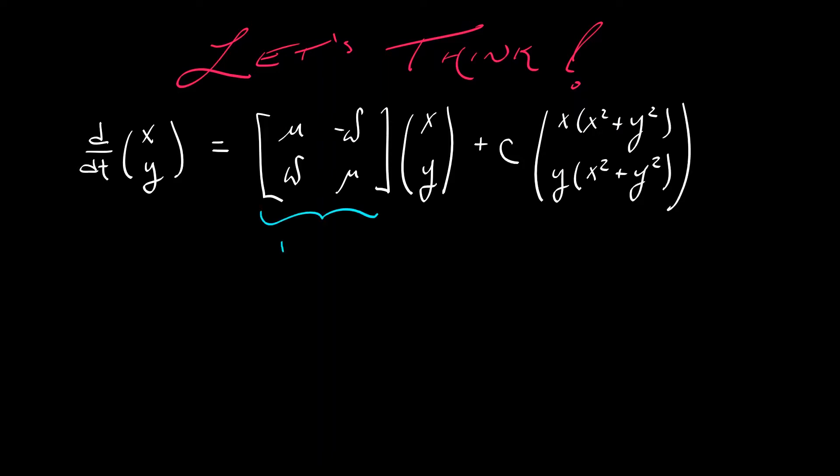So let's think. Let's write out that system. Take a careful look at what happens to the linear term when mu equals zero. In that case, what we have is a rotation matrix. Oh, that's interesting. And if I look at the nonlinear terms, I see prominent quantity x squared plus y squared. That is screaming out to me polar coordinates. So let's take this system in the xy plane and convert it to a system in polar coordinates.